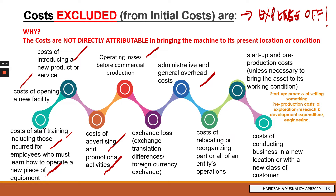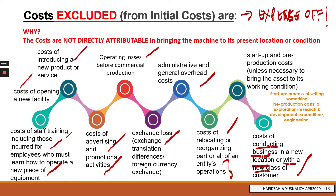Further excluded costs include: admin and general overhead costs, exchange losses incurred when purchasing PPE using foreign currency, cost of relocating or reorganizing the entity's operations, cost of conducting business in a new location, and start-up and pre-production costs — unless these are necessary to bring the asset to its working condition. Generally, pre-production costs are excluded from initial cost and treated as expenses.